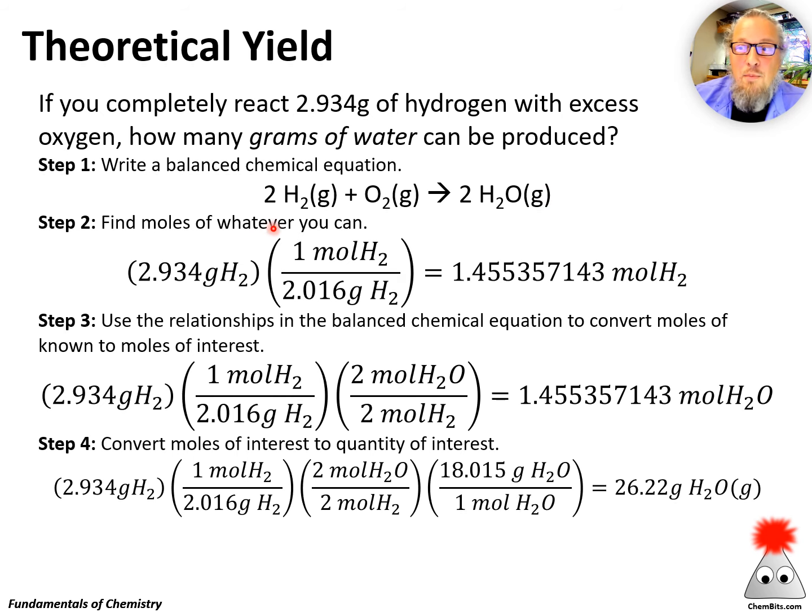Step two, find the moles of whatever you can. In this case, I only know how much hydrogen I'm using. So divide grams of hydrogen by grams per mole of hydrogen, and we get moles. Make sure your units cross out and cancel appropriately so that you've got it set up right. I'm going to carry a ridiculous number of sig figs for now because we're only going to round once at the end of the problem.